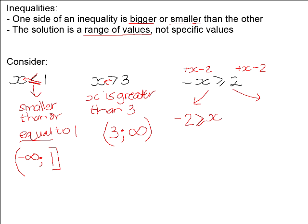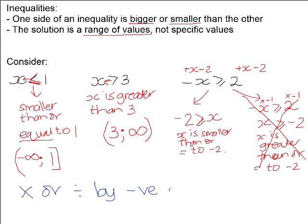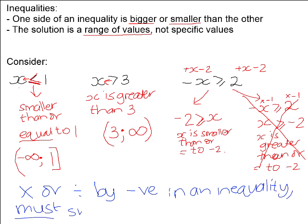Somebody else might say: I'd rather multiply both sides by negative 1. That gives positive x and negative 2. But if you look here, this inequality reads x is smaller than or equal to negative 2, while this other one reads x is greater than or equal to — so we're getting a different answer. The one that is incorrect is the second one. We must remember: when multiplying or dividing by a negative number in an inequality, we must swap the inequality sign around, otherwise we won't get the right answer.